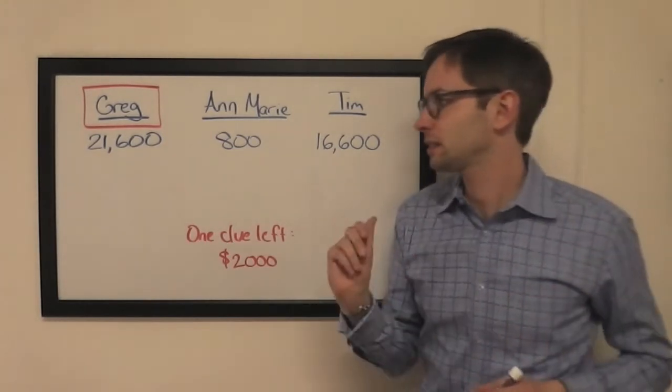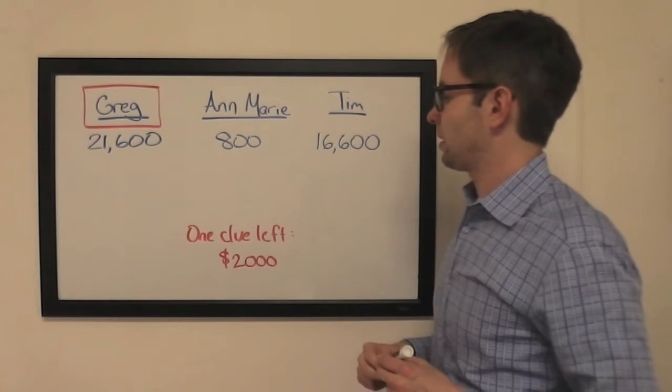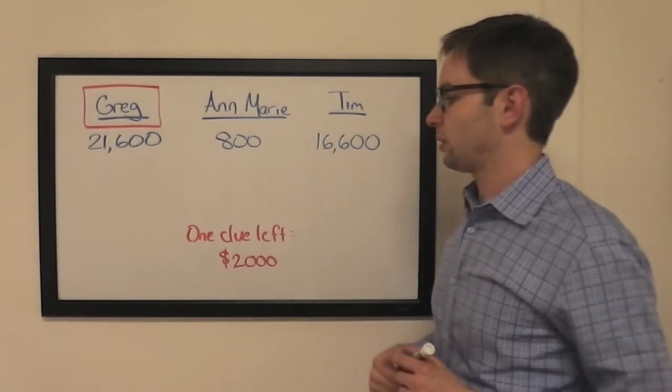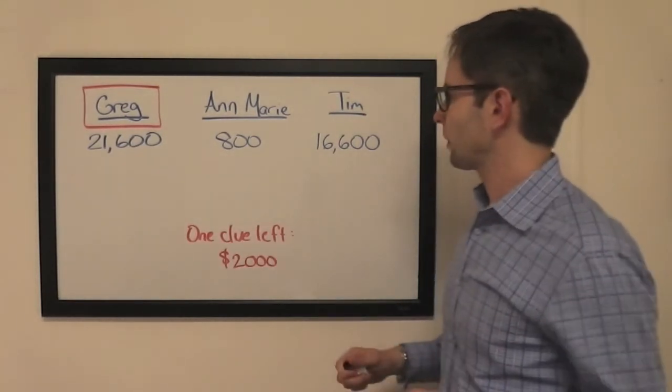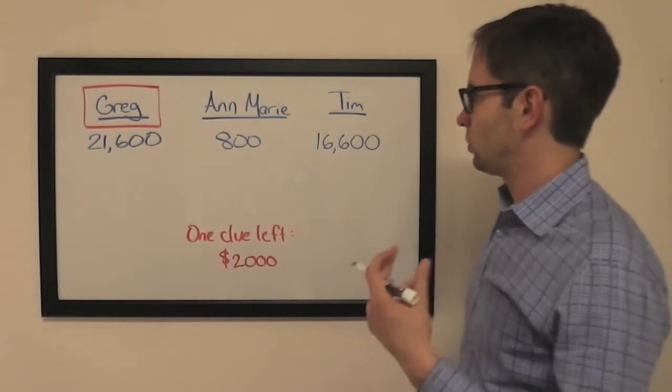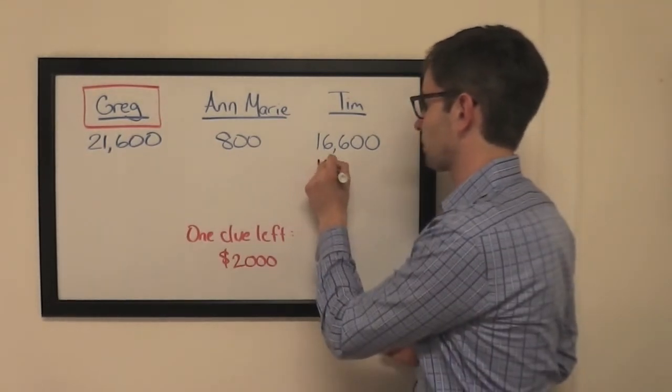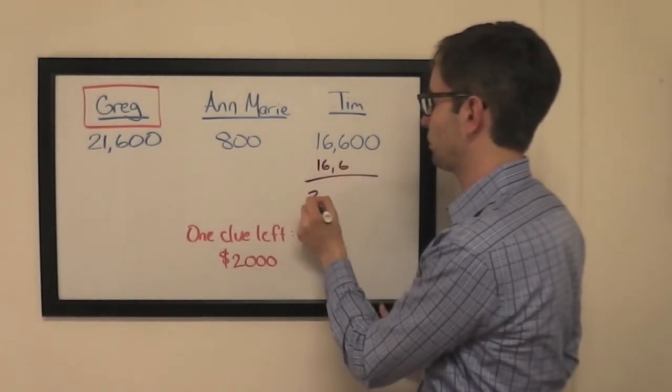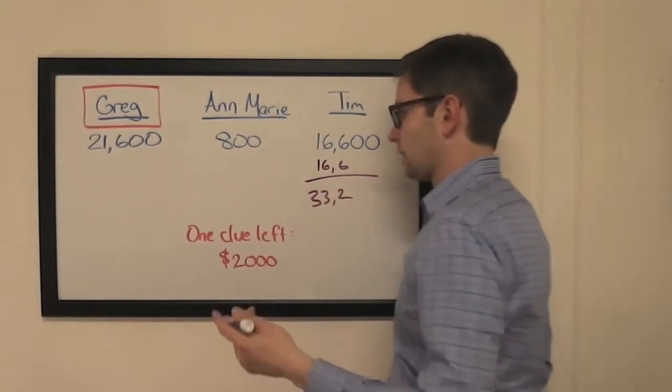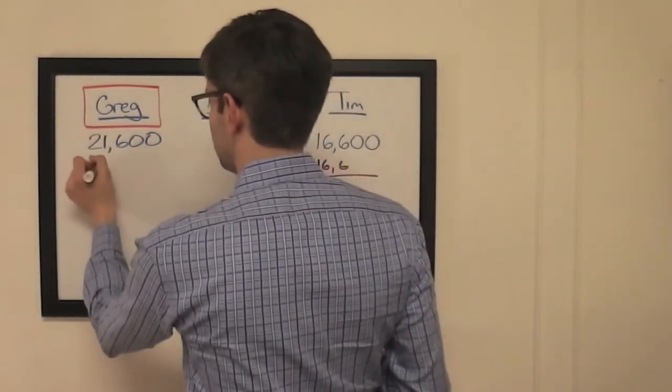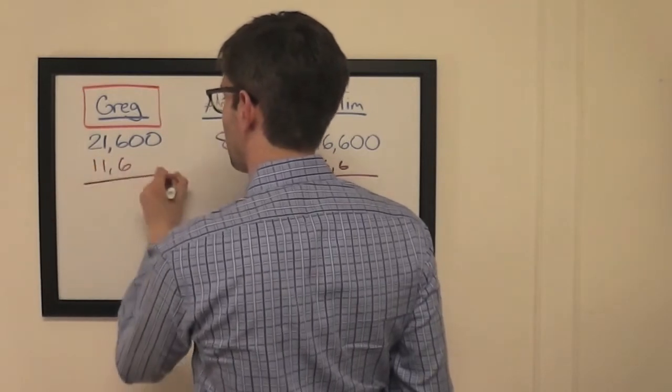Lots of things could happen. Let's first imagine that this clue either goes unplayed or goes unanswered. If Greg wants to lock Tim up now, he'll have to get to above double Tim's total. That's $33,200. That's going to be a wager of $11,601.